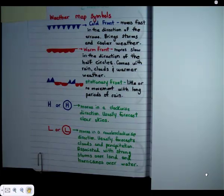A warm front moves slow in the direction of the half circles, and it comes with rain, clouds, and warmer weather. So as you see, if you had this symbol on the map, you know that this warm front would be moving south in the direction that the circles are facing.